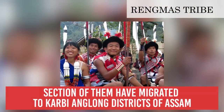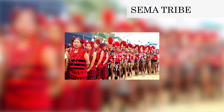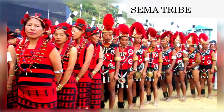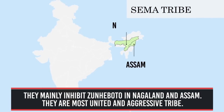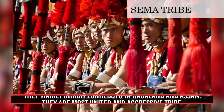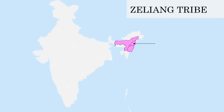A section of the Rengmas have migrated to Karbi-Anglong districts of Assam. Sema Sumi Naga Tribe: they are one of the major tribes of Nagaland recognized for their martial arts skills. They mainly inhabit Zunheboto in Nagaland and Assam. They are the most united and aggressive tribe. Zelyang Tribe: they live primarily in the south-western part of the Kohima district and inhabit the Barail range of hills in Manipur, Nagaland and Assam.